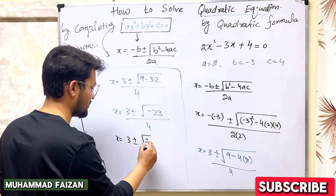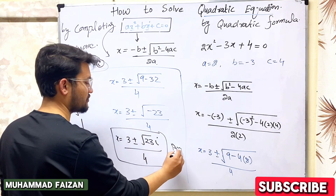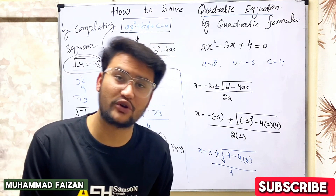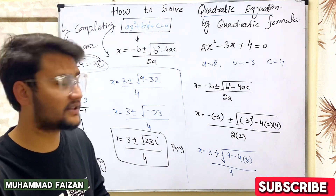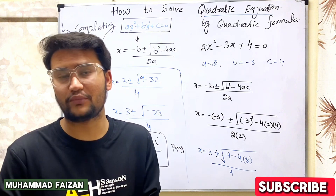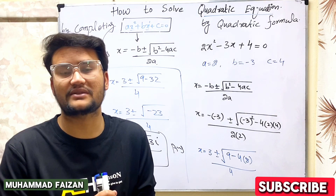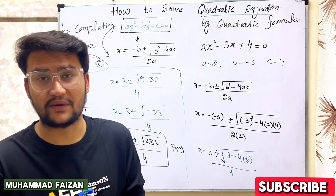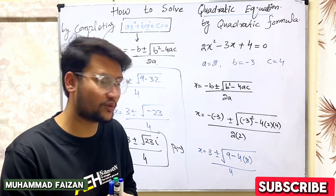The answer is 3 plus or minus 23 iota over 4. I hope that you now know how the quadratic equation is simplified by the quadratic formula and that the video is clear. In the next video, please subscribe to this channel and join the playlist. The textbook will be very helpful.